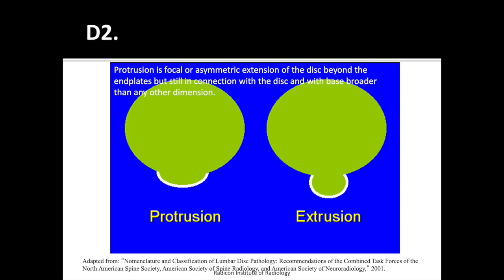Focal disc herniations may take the form of protrusion or extrusion, based on the shape of the herniated disc material. A protrusion is a focal asymmetric extension of the disc beyond the end plates, still in connection with the disc margin, where the base is broader than any other dimension in the same plane. If any dimension of the disc is broader than the base in the same plane, it is classified as extrusion. Extrusion has a higher chance of becoming detached and being absorbed, giving it a better prognosis than protrusion.